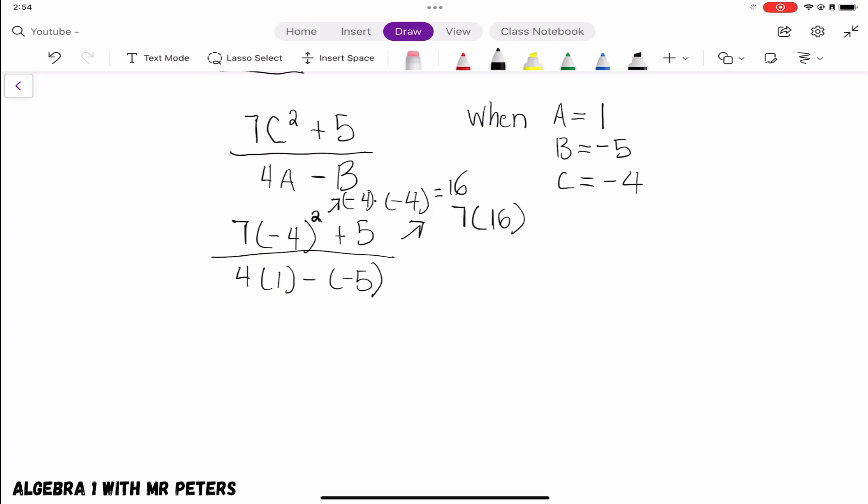So once we do that, we're going to get 112 plus 5. So the final answer for our numerator is 117.